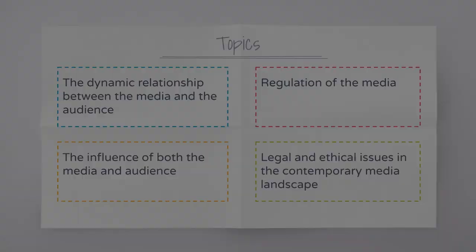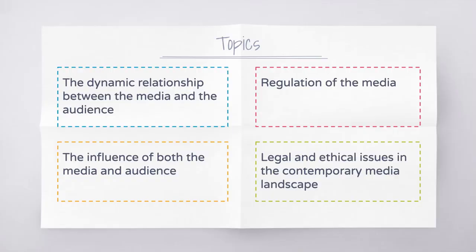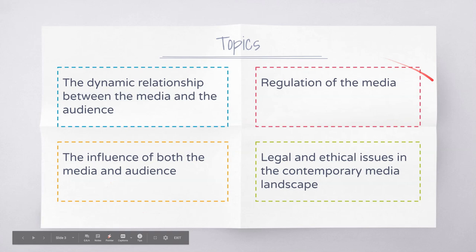To make it a little bit easier, we're going to break things into four separate topics. All of those key knowledge and key skills have relationships with one another, so it's a bit hard to isolate each, but we'll essentially be breaking things up into: the dynamic relationship between the media and the audience; the influence of both the media and audiences; the regulation of the media; and legal and ethical issues in the contemporary media landscape.